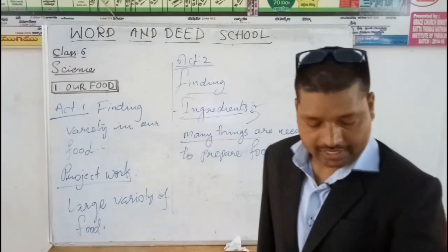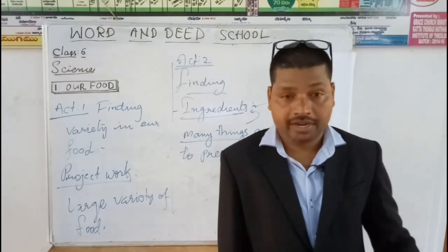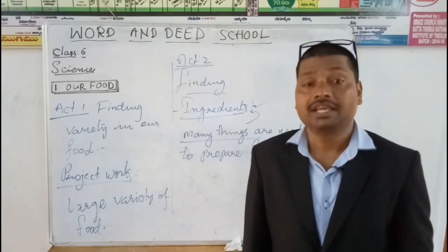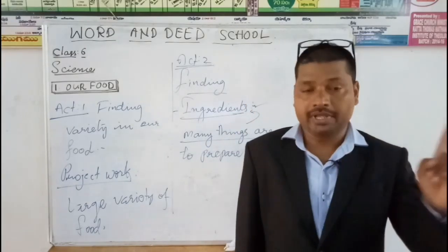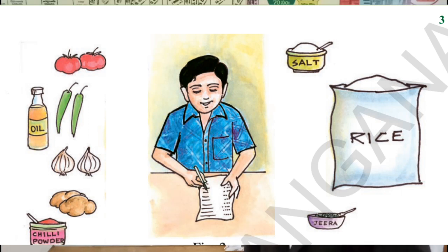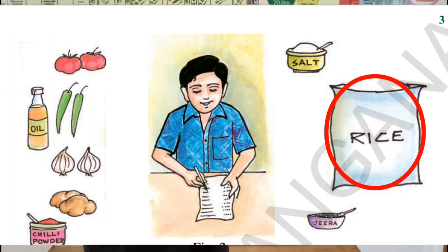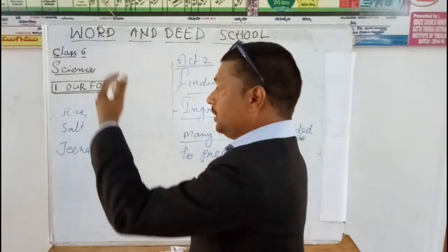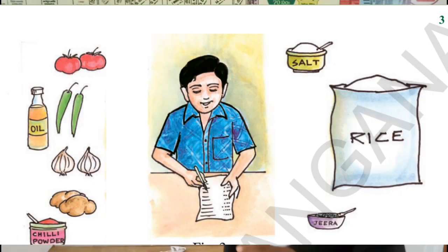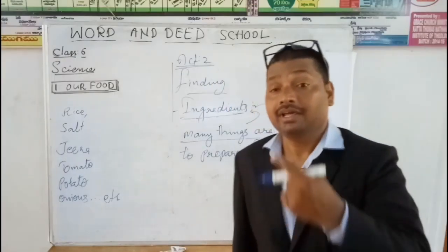For example, Srinivas wants to eat something special on Sunday. He asked his mother to make biryani. Srinivas wanted to help his mother, so she asked him to prepare a list of materials required to make biryani. Srinivas made the list including rice, salt, jeera, tomato, potato, onions, etc.